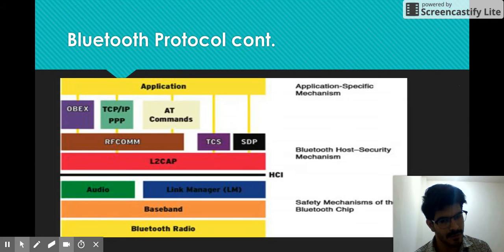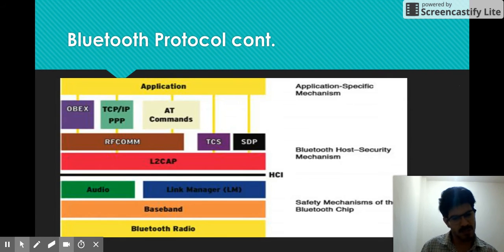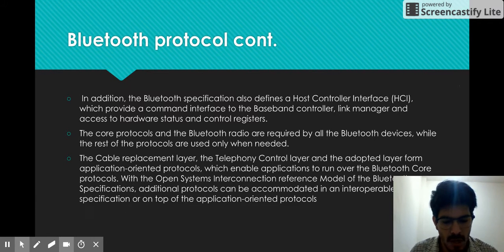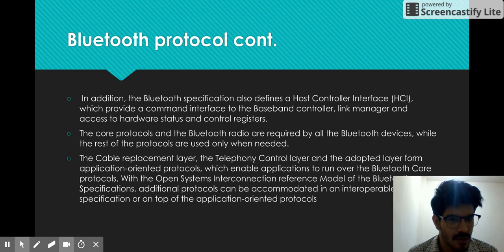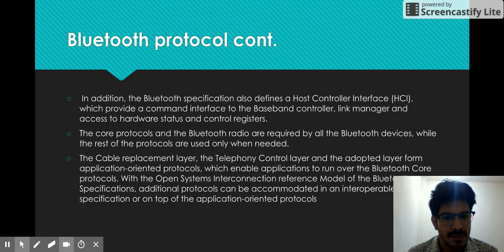Previously, we used infrared transmission, but due to low modulation of infrared waves, we could not transmit much data. Now we use radio frequencies, which are highly modulating, so we can transfer more data in a shorter period of time — that's why radio frequency is the core transmitting media of Bluetooth. The Bluetooth specification also defines a host control interface, a mediator that acts as an interoperator between hardware and software, providing a command interface to the baseband controller, link manager, and access to hardware status and control registers. The core protocols and Bluetooth radios are required by all Bluetooth devices, while the cable replacement layer, telephony control layer, and adopted application-oriented protocols enable applications to run over the Bluetooth core protocols.